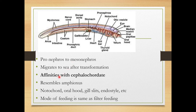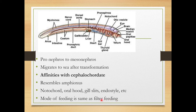The Ammocoetes larva shows many characters that resemble Amphioxus, the cephalochordate. The main shared characters are: presence of notochord, gill slits are present, endostyle is present, and the mode of feeding is also the same — filter feeding.